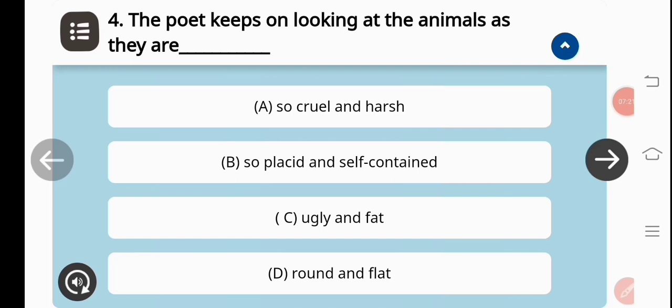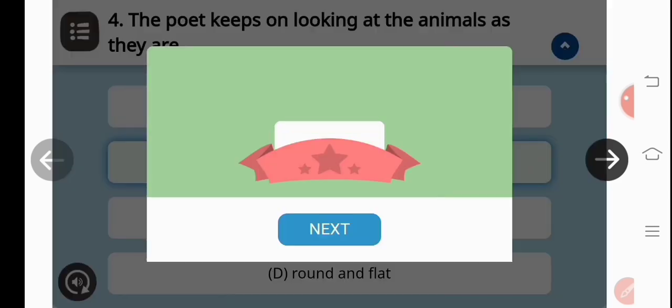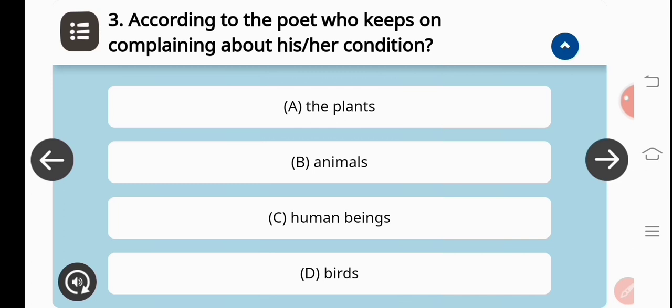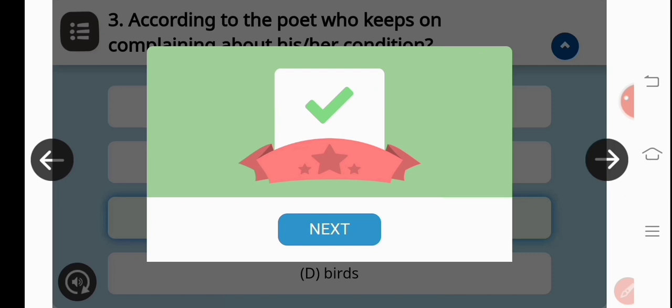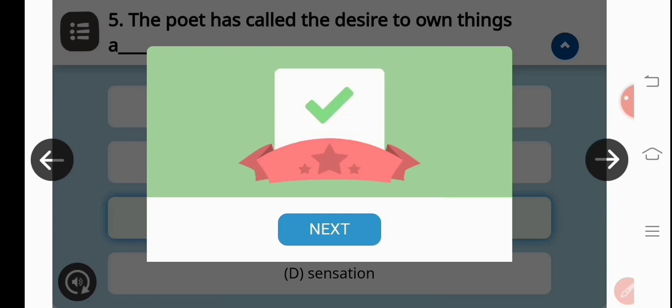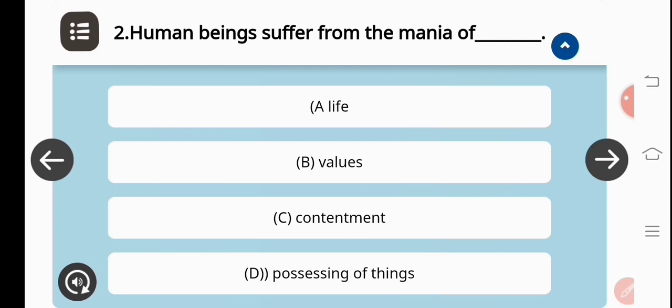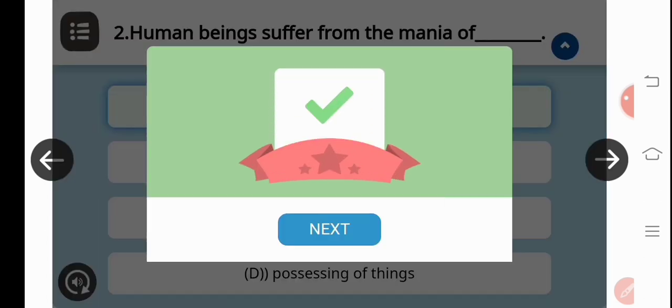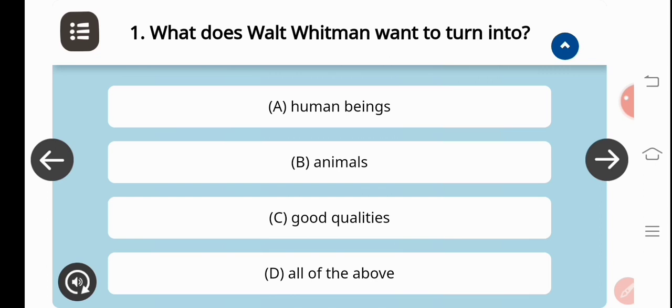Now we will go and see another question. This is MCQs, multiple choice questions. The poet keeps on looking at the animals as they are so placid and self-contained - option number B. Correct. Now we'll see another question. According to the poet, who keeps on complaining about his condition? Human beings. Correct answer. Now we'll go and see another question. The poet has called the desire to own things a mania. Mania, correct answer. Now we'll see another question. Human beings suffer from the mania of - and the answer would be human beings suffer from the mania of life. Next. What does Walt Whitman want to turn into? That is animals.